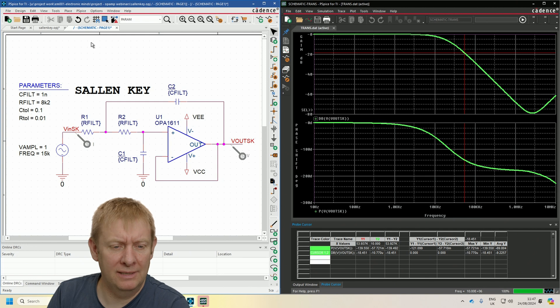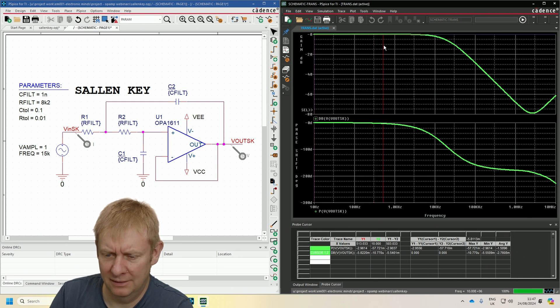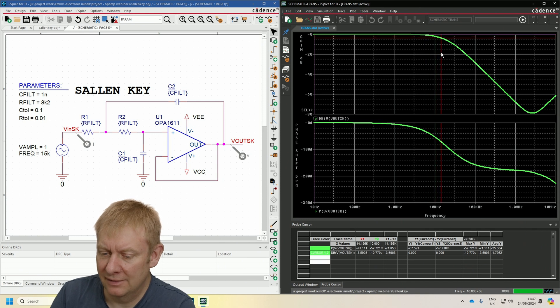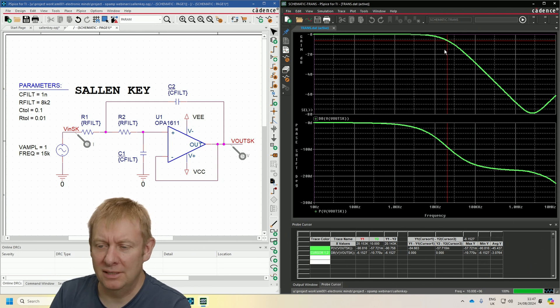On the right side you can see an AC sweep. We're sweeping frequency from 10 hertz all the way up to 10 megahertz. We're plotting the gain through to Vout, which is this top curve, and the phase shift, which is this curve here. In the passband we've got about 0 dB gain, so unity gain. As we get up to 20 kilohertz, the gain is about minus 6 dBs, which is what you'd expect from a second-order filter, and the phase shift is about 90 degrees at that point.